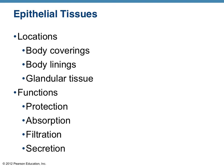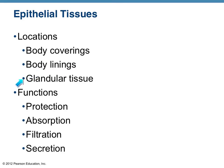Starting with epithelial tissue or epithelium, the locations vary throughout the entire body. But the main job and the main place you would find them is that they are coverers and liners. They cover the body — for instance, your skin is an epithelium — and they line body cavities. Epithelial tissue kind of acts as a tarp to cover and line things. It's also part of glandular tissue, which you will learn more about in a more advanced anatomy and physiology course.